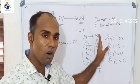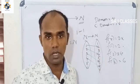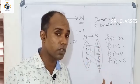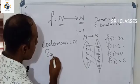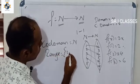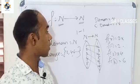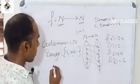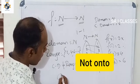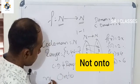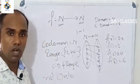In this mapping, the image does not cover everything. The range only contains even numbers {2, 4, 6...}. Domain is not equal to range, therefore this is not onto.